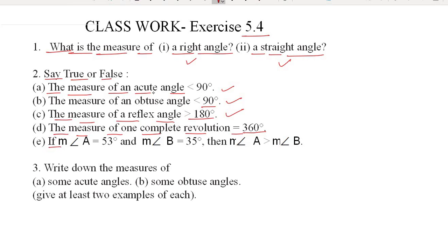Option E: if angle A measures 53° and angle B measures 35°, then M∠A is greater than M∠B — is it true or false? Angle A measures 53° and angle B measures 35°, so the question asks if M∠A is greater than M∠B — you will do this by yourself. The third question: write down the measure of some acute angles and some obtuse angles — you have to do this question yourself, writing two examples of acute angles and two examples of obtuse angles.